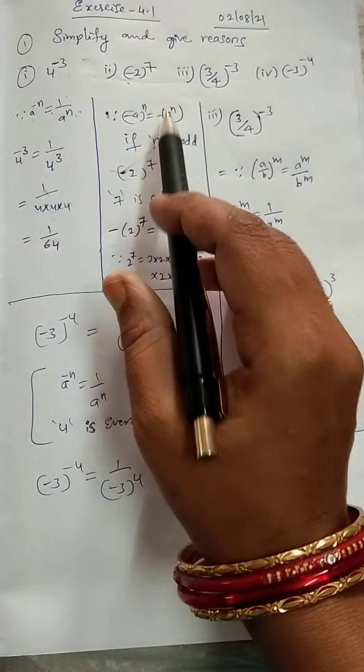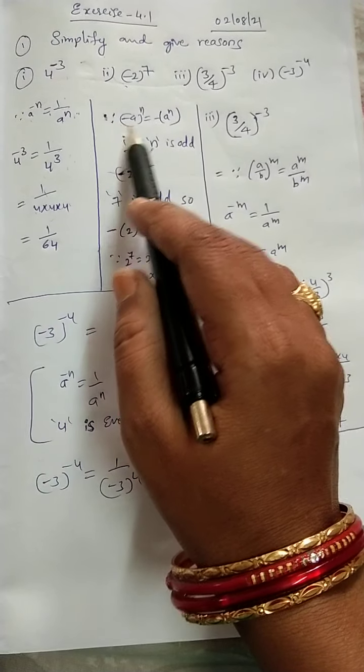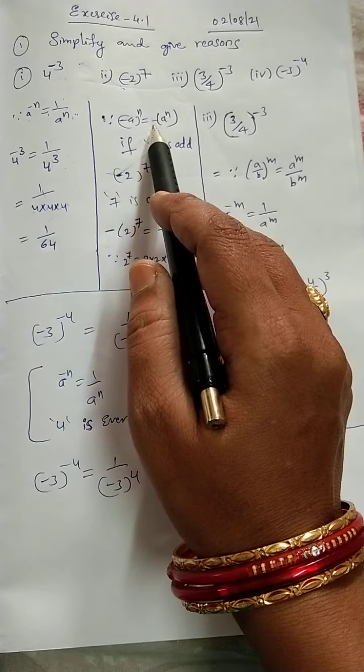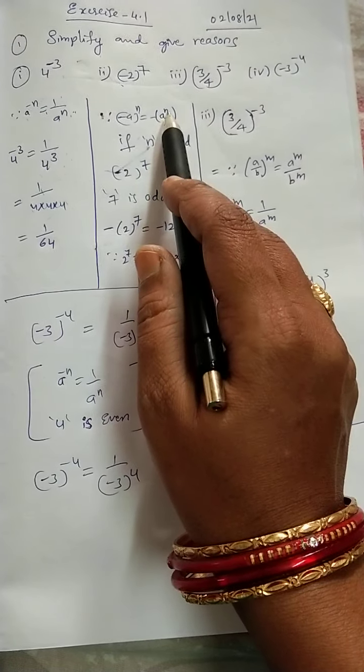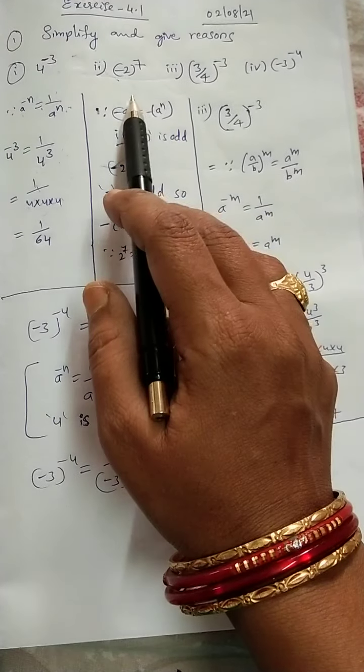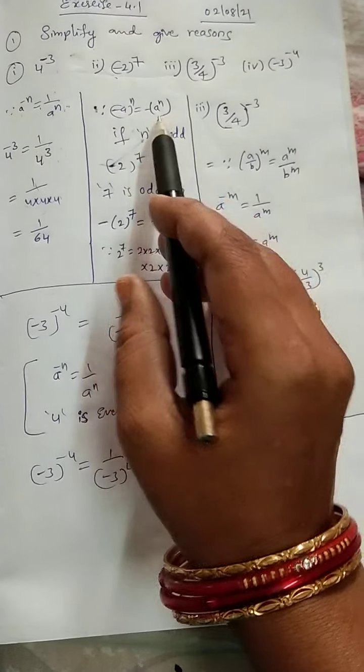Now, minus 2 power 7. Here, it is in the form of minus A power N is equal to minus 1 into A power N. Why? Because N is odd. If N is odd like this, we can change.